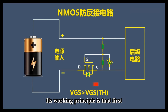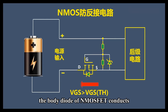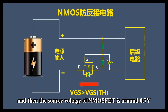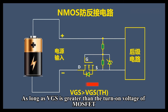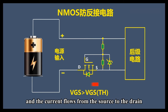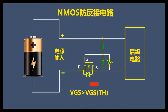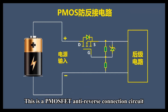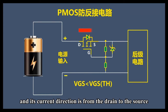Its working principle is that first, the body diode of the MOSFET conducts and then the source voltage of the MOSFET is around 0.7 volts. As long as VGS is greater than the turn-on voltage of the MOSFET, the MOSFET will conduct and the current flows from the source to the drain.